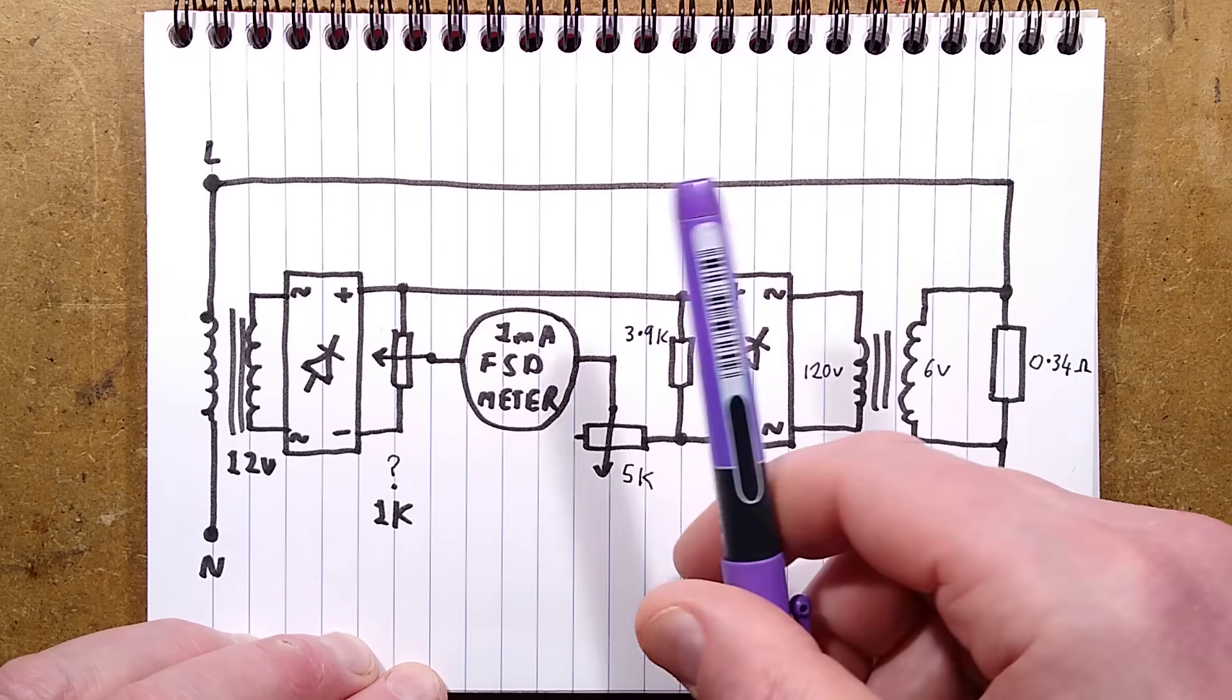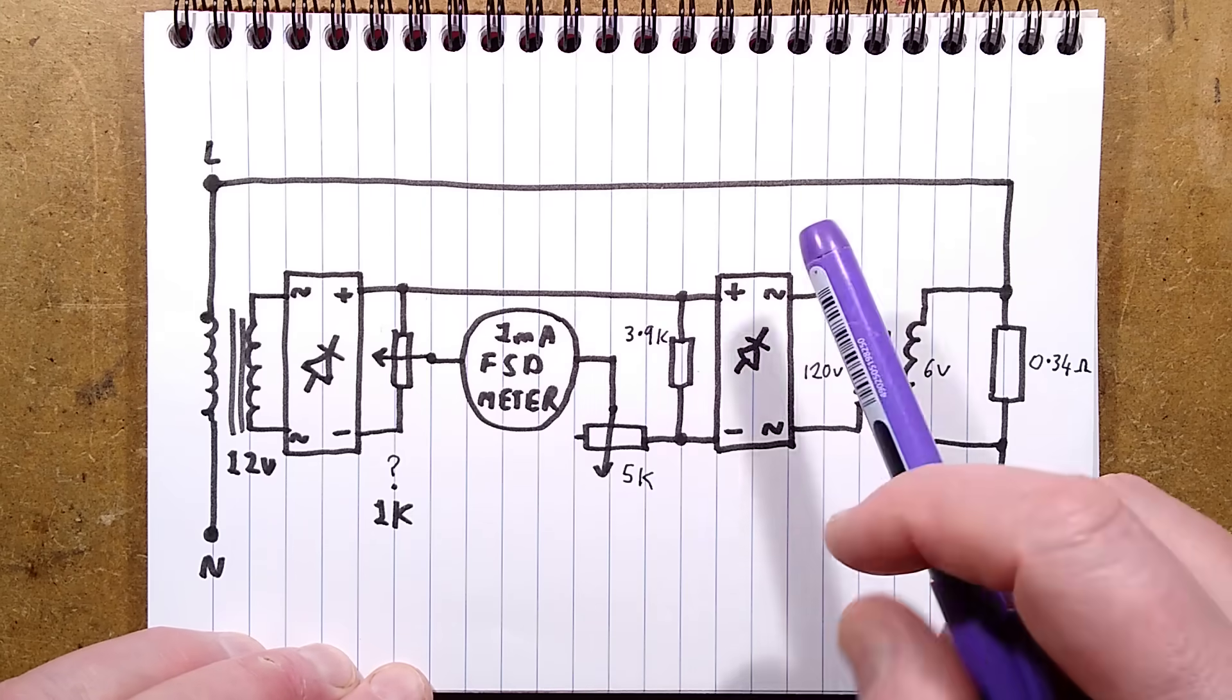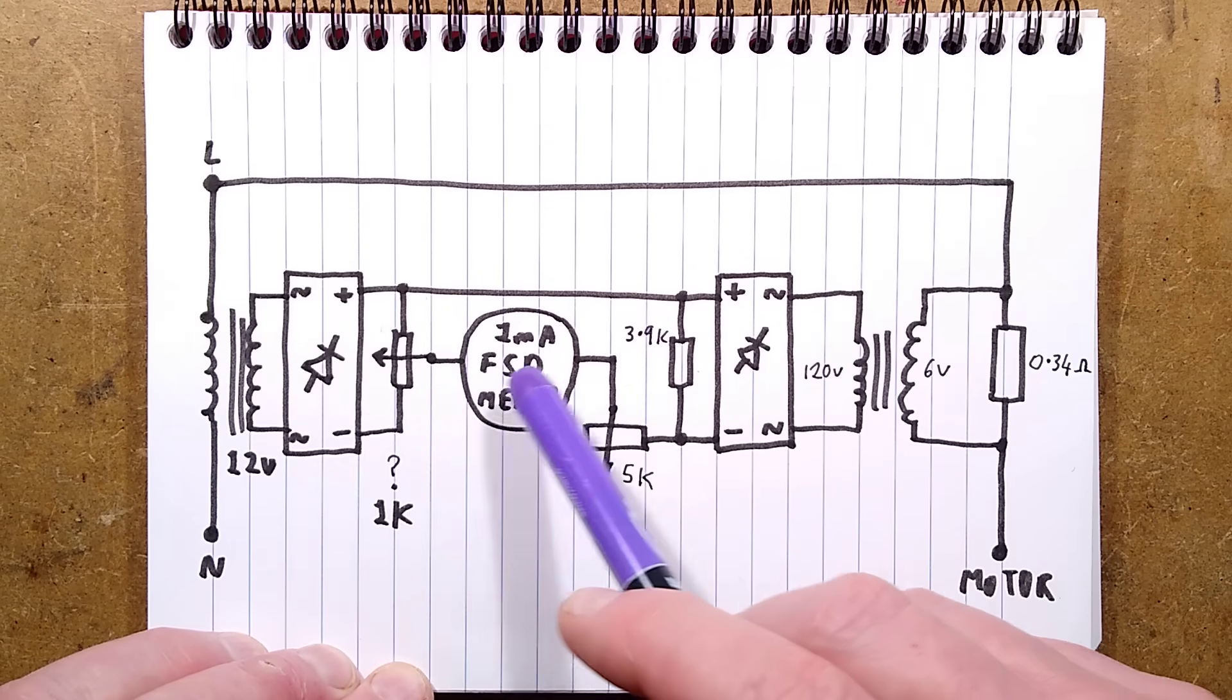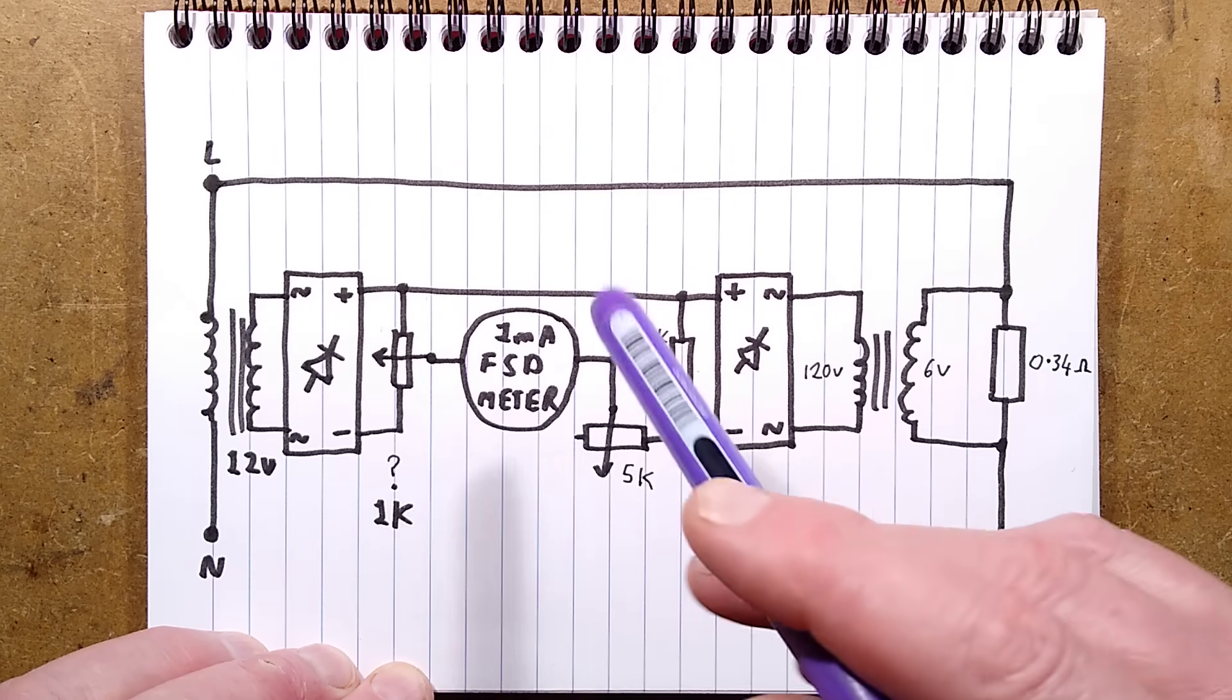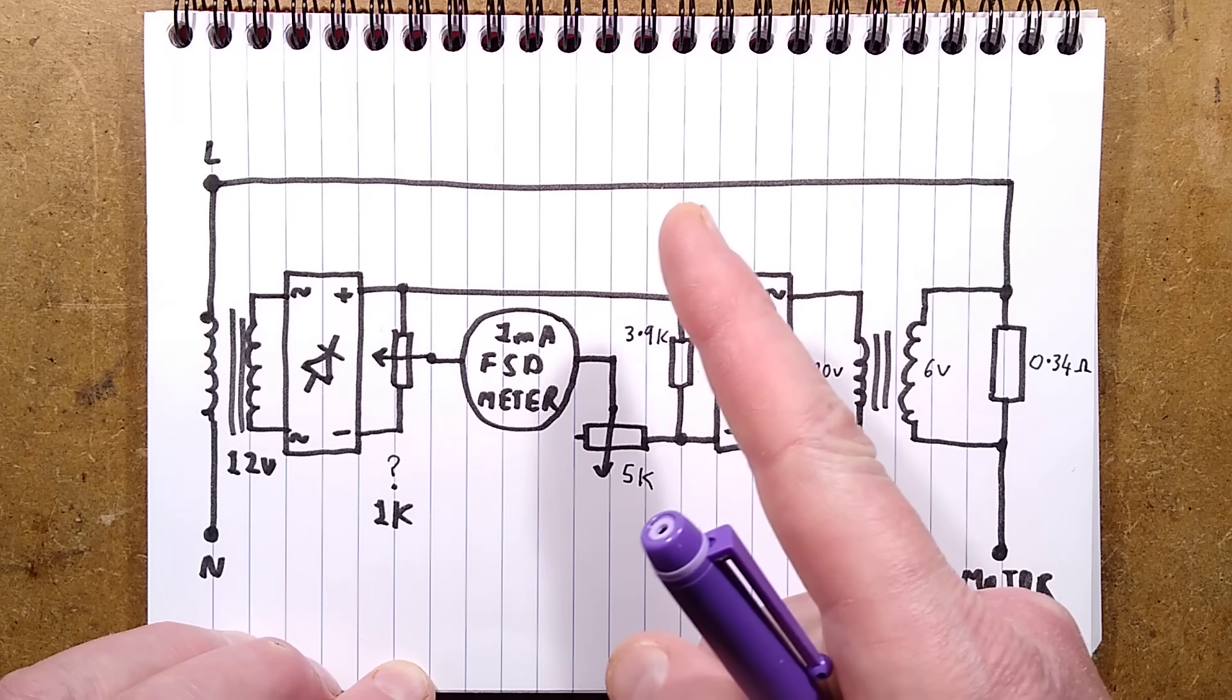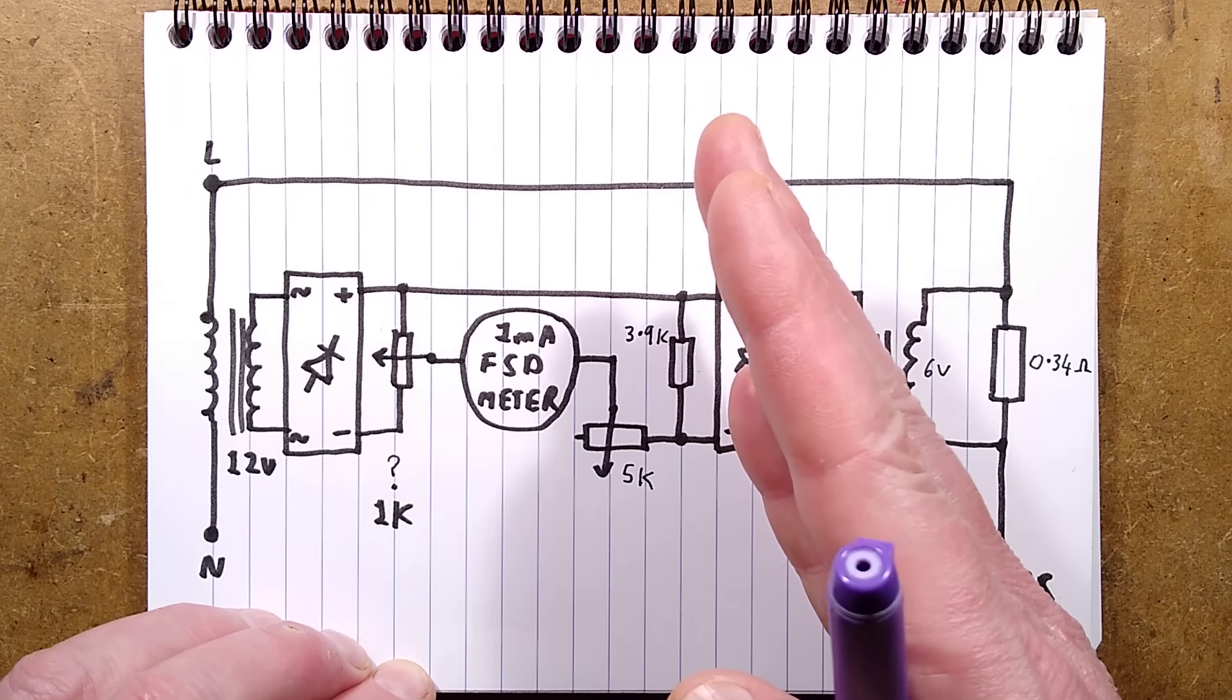It's one of those traditional analog meters with the needle, and that's just as well because there's no smoothing on the output of these transformers here. It relies on the ballistic behavior of the meter - it's going to just average the value.